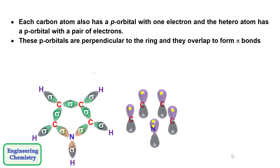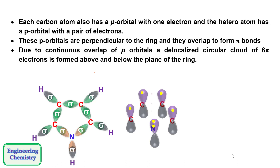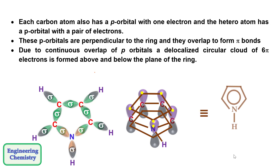Each carbon atom also has a p orbital with one electron, and the heteroatom has a p orbital with a pair of electrons. These p orbitals are perpendicular to the ring and they overlap to form pi bonds. Due to continuous overlap of p orbitals, a delocalized circular cloud of 6 pi electrons is formed above and below the plane of the ring. This constitutes the structure of Pyrrole.